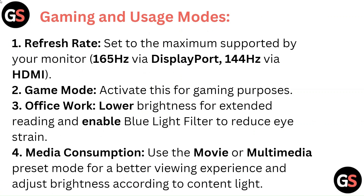Gaming and Usage Modes: Refresh Rate set to the maximum supported by the monitor — 165Hz via DisplayPort, 144Hz via HDMI. Game Mode: Activate this for gaming purposes. Office Work: Lower brightness for extended reading and enable blue light filter to reduce eye strain. Media Consumption: Use the movie or multimedia preset mode for a better viewing experience and adjust brightness according to content light.